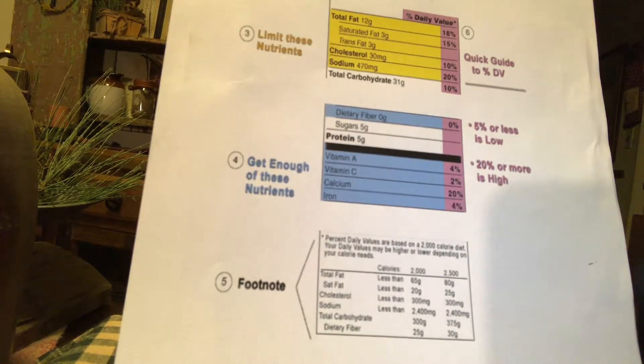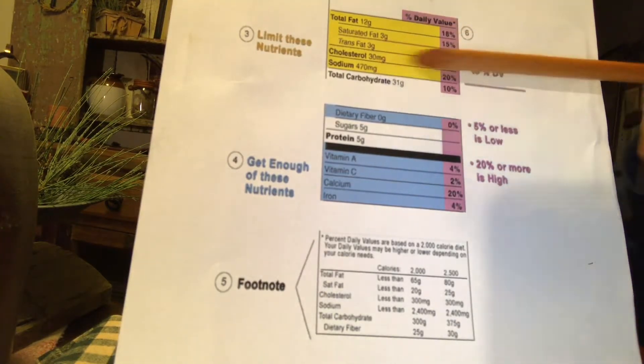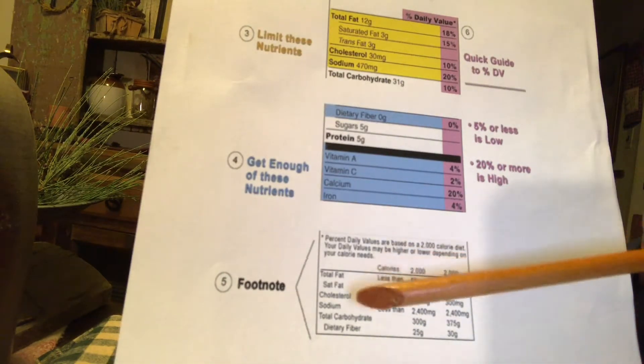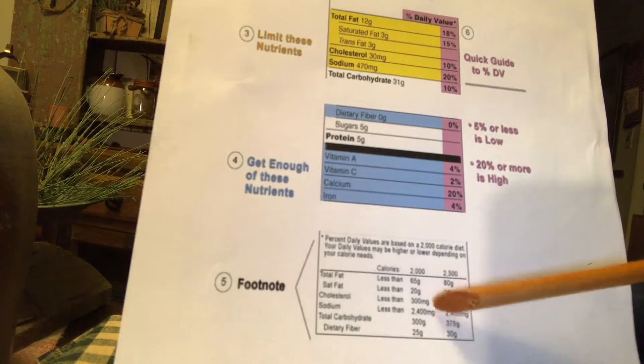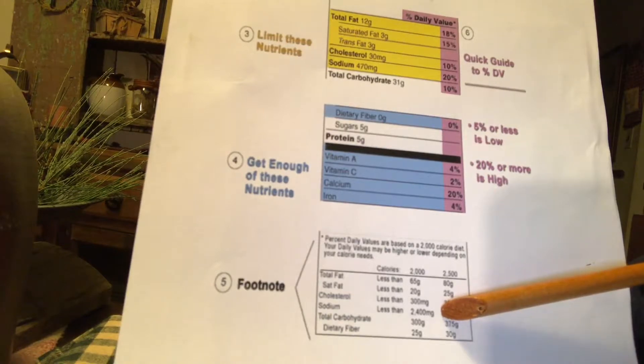However, if we're sticking to this example of maybe that you ate this whole box, therefore, that 470 milligrams turns into 940 milligrams. So, based upon that they want you to limit this to less than 2,400 milligrams, it's not half, but it's almost half when you consume one whole box.